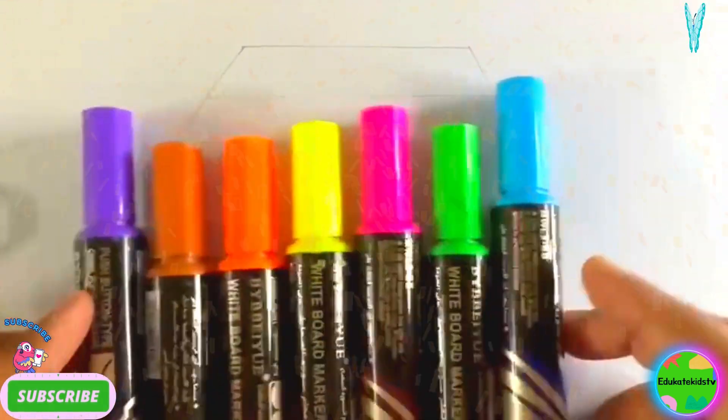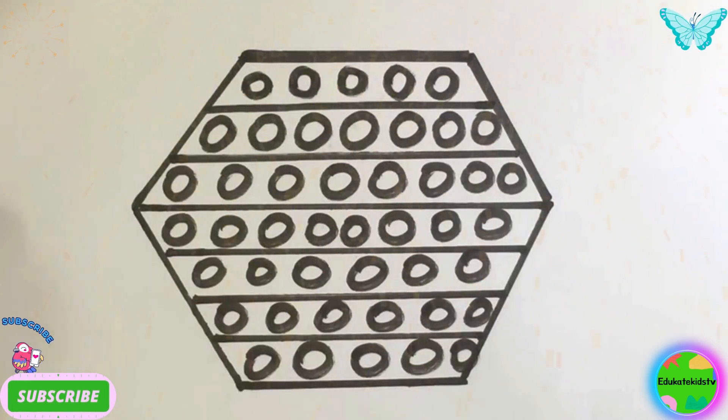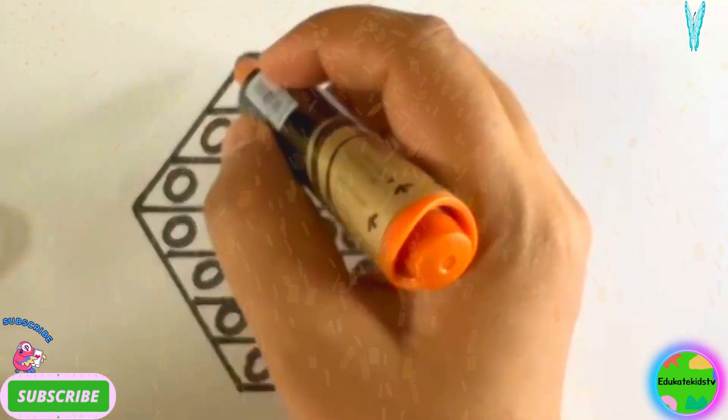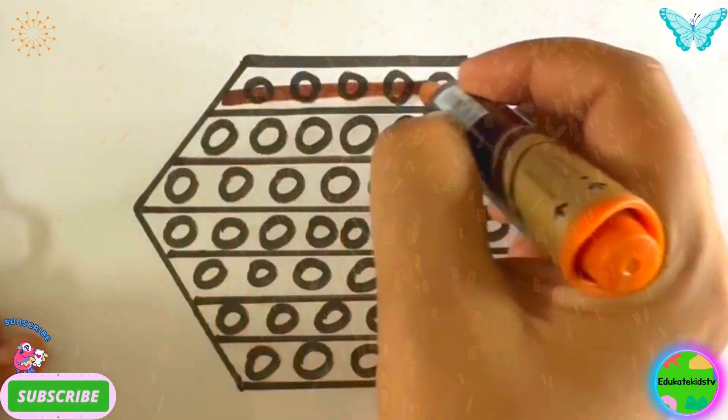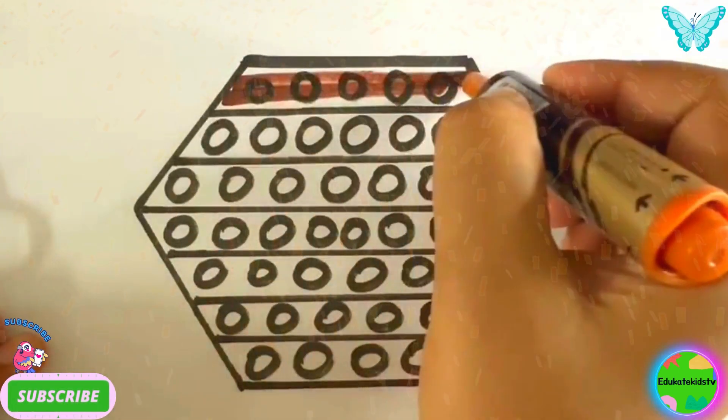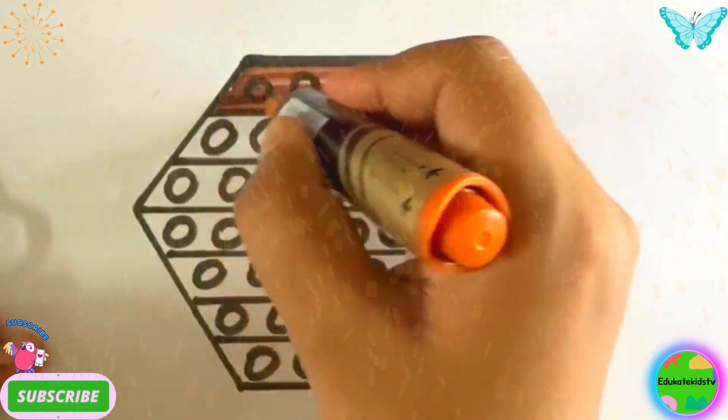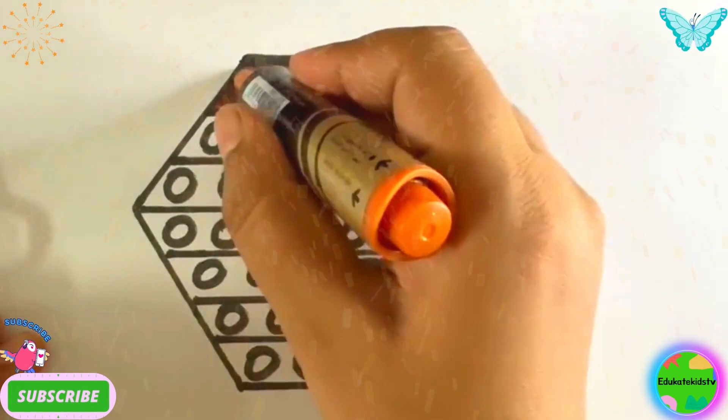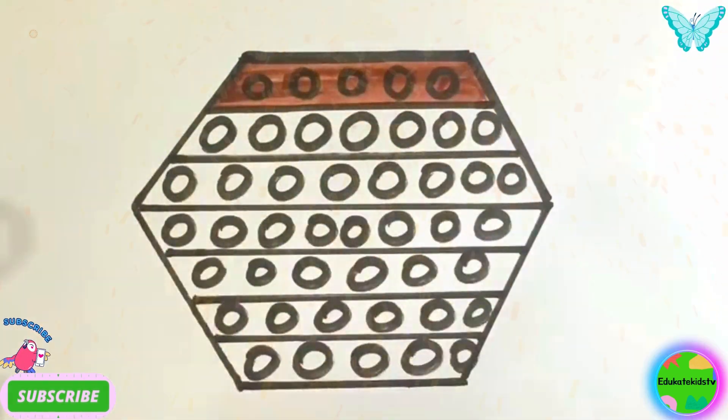Today we are going to take brown color. So I'll take brown color and I'll color the first line. Wow! Green color. Hooray! Do you like it? Yes! It's lovely.